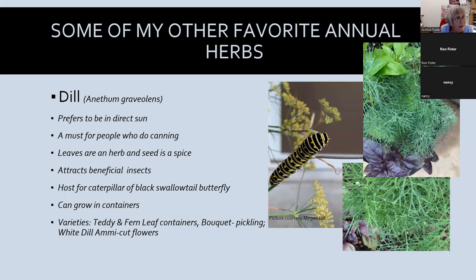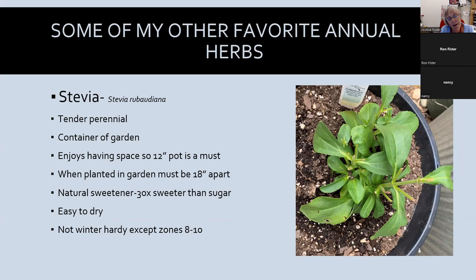Dill is a must if you do a lot of canning. I don't have a lot of space, so I use compact varieties like Teddy and Fernleaf and grow them in a container. Dill is also good with fish, potatoes, and carrots — it's versatile. Like cilantro, dill is both an herb and a spice depending on what part of the plant you use. It attracts many beneficial insects too. Stevia has been around a long time but was hard to grow from seed; I'm starting to see it as established plants at stores like Lowe's. It needs at least a 12-inch pot indoors and 18 inches apart in the garden — it's 30 times sweeter than sugar.